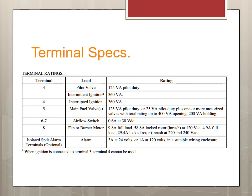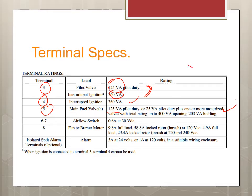These are the terminals where we connect the control. Terminal 3 goes to the pilot valve and to the ignition — they go together. The diagram shows the watts for that terminal so you can determine the amperage draw. If we are using interrupted ignition, we use terminal 4 instead of terminal 3. The main fuel valve connects to terminal 5. VA here is equivalent to watts.